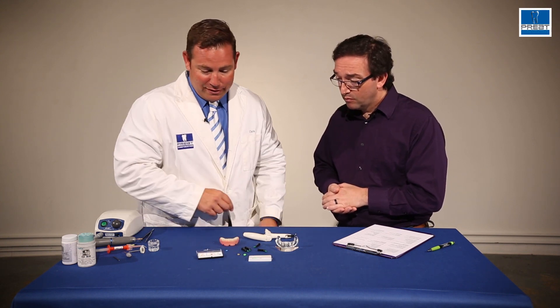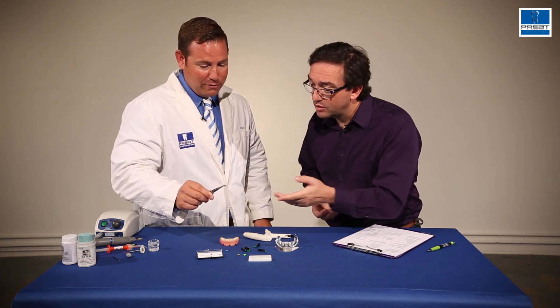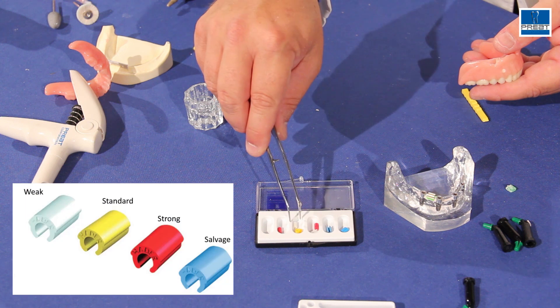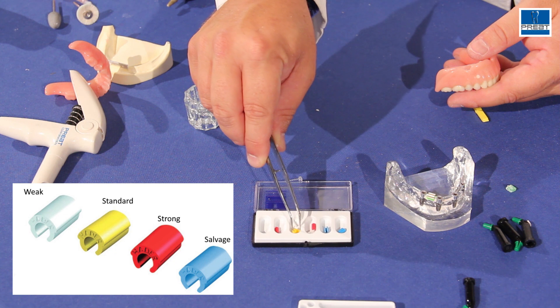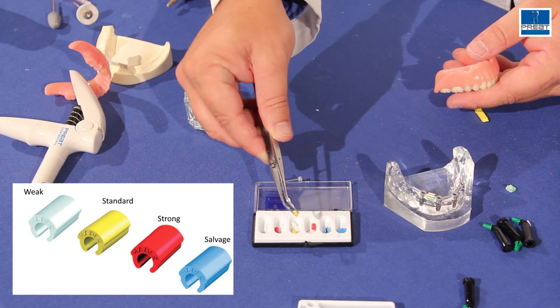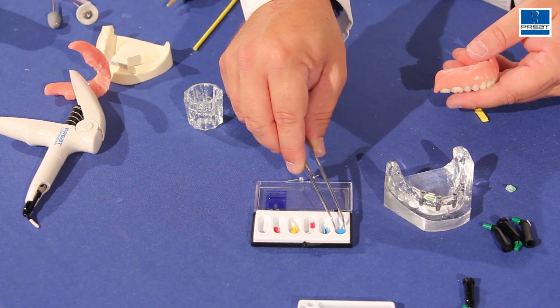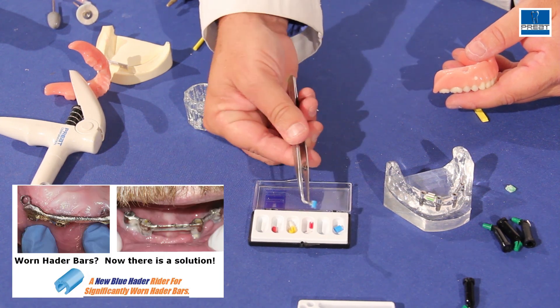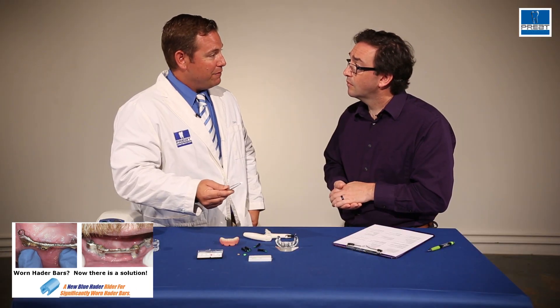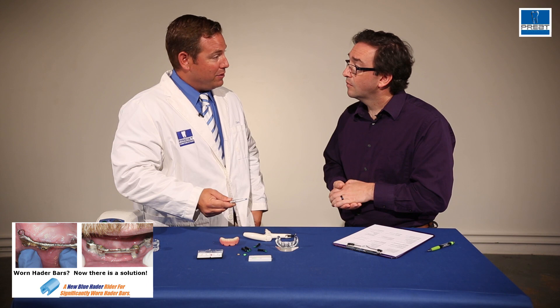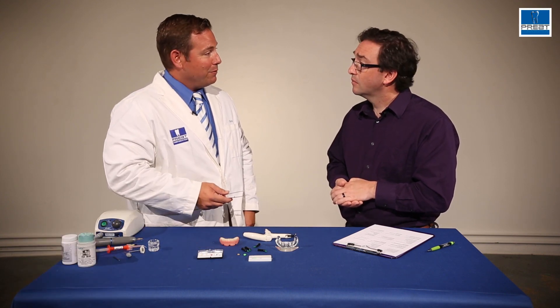And of course, we have multiple retentions of the Hader clips. What's the variation between these colors? The white is the weakest. Yellow is the standard, the most popular. If a patient wants more retention or if the retentive area of the bar starts to wear down, we have a red clip. And then the blue clip is designed with a smaller internal diameter, 1.5, to compensate for severe wear on the bar itself. So this way you would only use it as a salvage clip if the red was not providing retention.